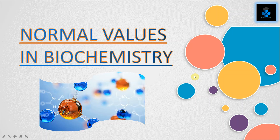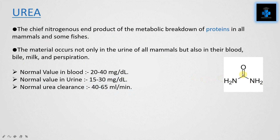Welcome to Medifaction. Today we will learn about some important products and their normal values in the field of biochemistry. First one is urea. Urea is the chief nitrogenous end product of the metabolic breakdown of proteins in all mammals and some fishes. The material occurs not only in the urine of all mammals but also in their blood, bile, milk, and perspiration — the process of sweating.